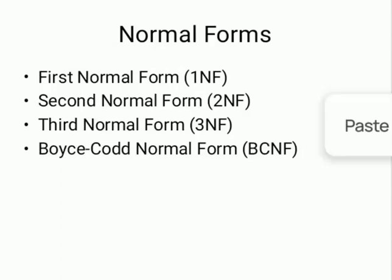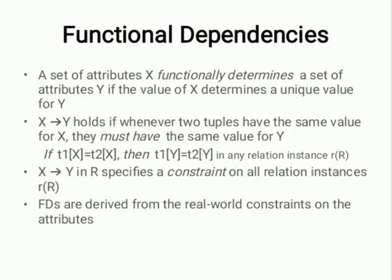The normal forms are: First Normal Form, Second Normal Form, Third Normal Form, and Boyce-Codd Normal Form. Functional dependency: a set of attributes X functionally determines a set of attributes Y if the value of X determines a unique value for Y. X→Y holds if whenever two tuples have the same value for X, they must have the same value for Y — that is, if t1(X) = t2(X) then t1(Y) = t2(Y) in any relation instance R. X→Y in R specifies a constraint on all relation instances R. Functional dependencies are derived from the real-world constraints on the attributes.